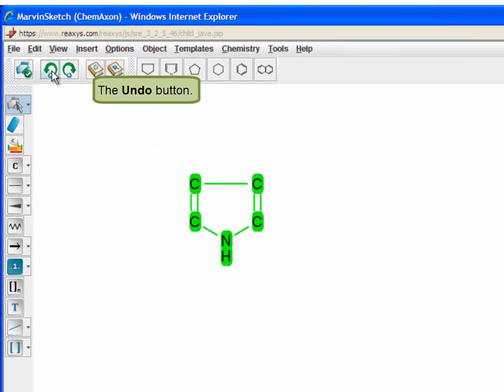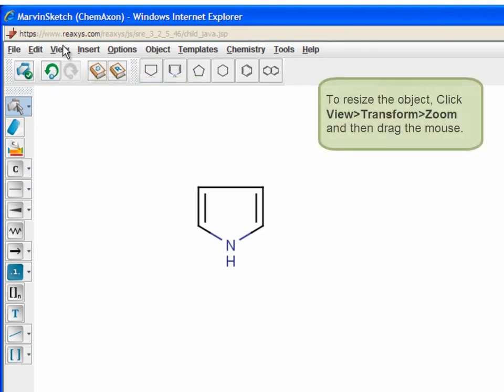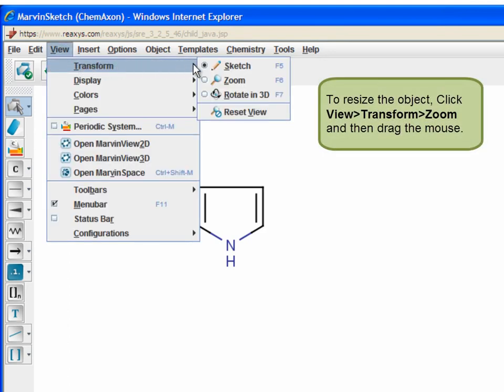Click the Undo button to return to the previous view. To resize the object, click View Transform Zoom and then drag the mouse.